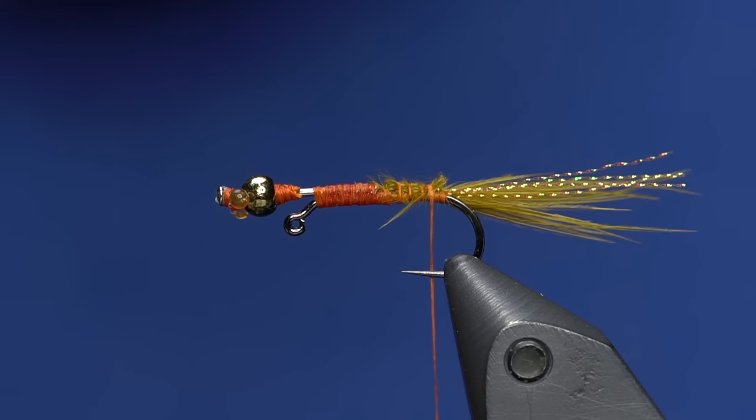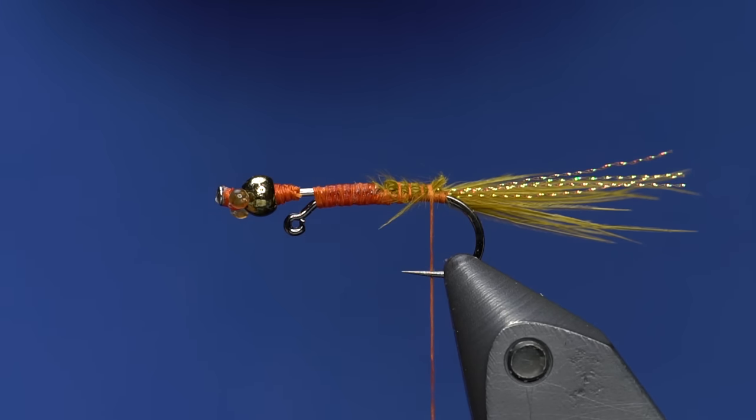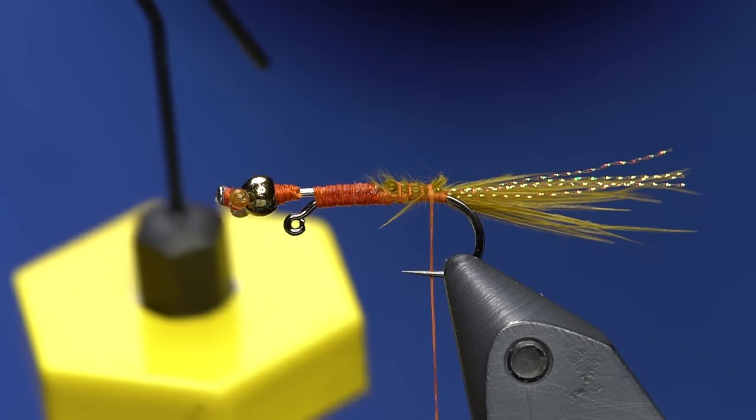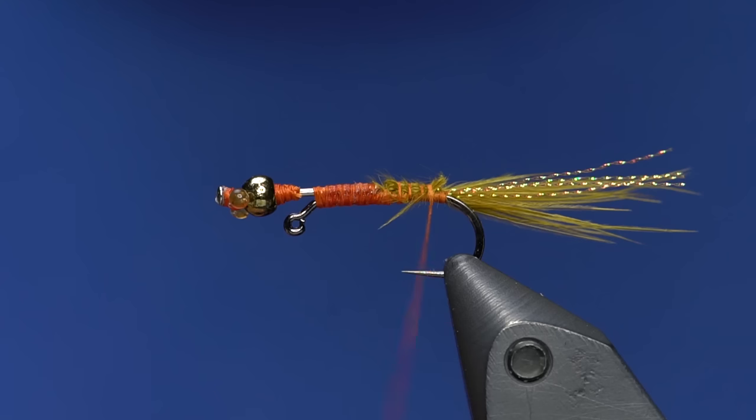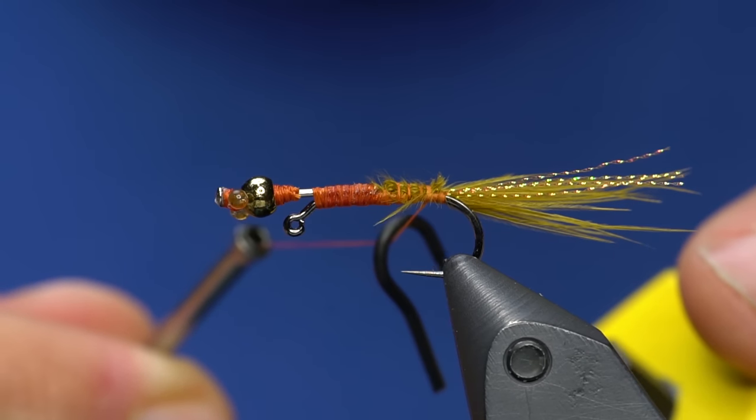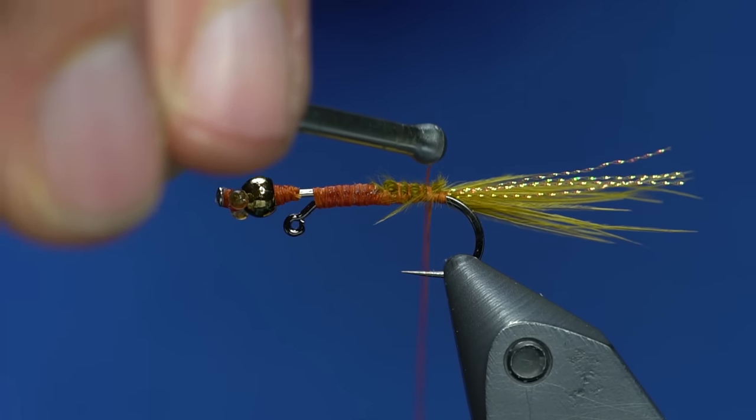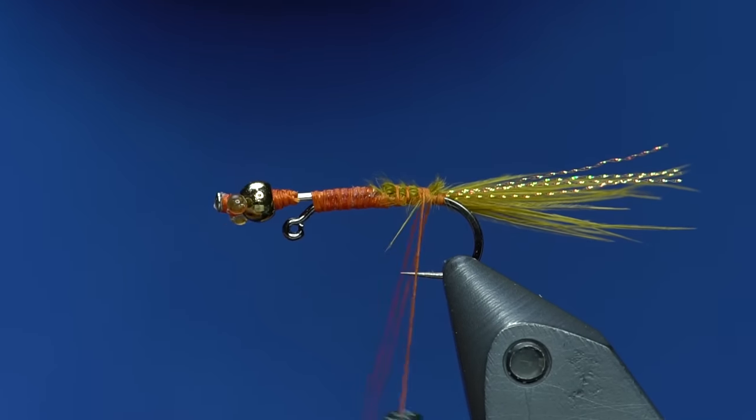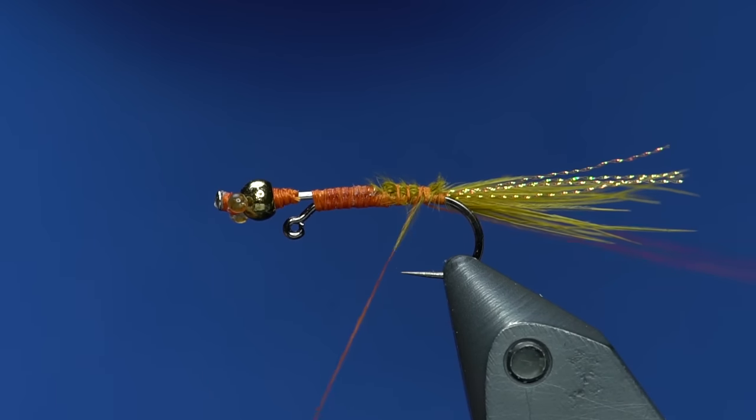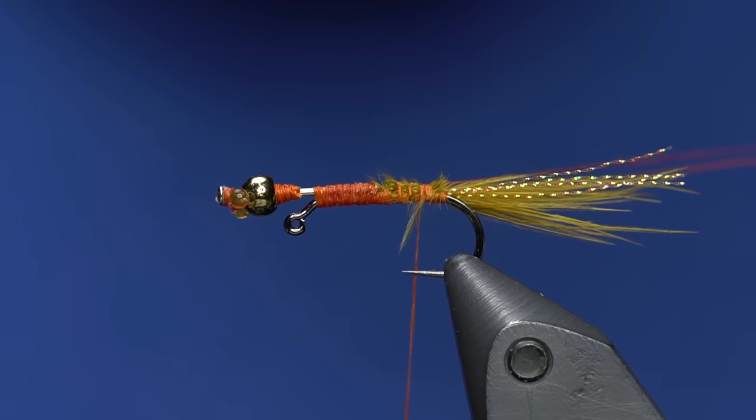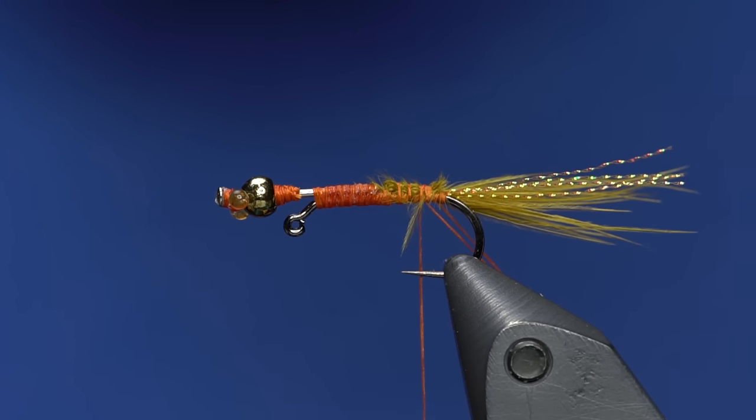Next thing I'm going to do is make a dubbing loop. I'm going to grab my handy Shepherd's loop on the Loon Gator Grip. You just grab your thread and you want about three inches or so of loop. I'll do a couple wraps, then come in behind it and lock it in.